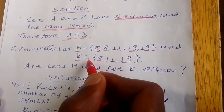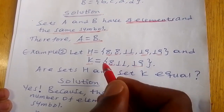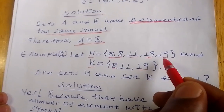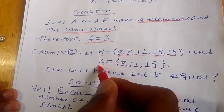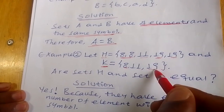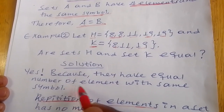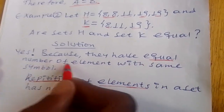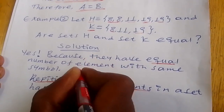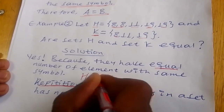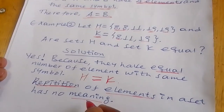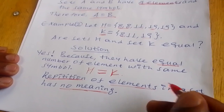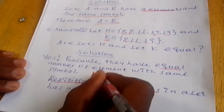Example 2: Let set H equal to {8, 8, 11, 19, 19} and set K equal to {8, 11, 19}. Note that the repetition of elements in a set has no meaning. So both sets have the same elements, therefore H equals K — they are equal sets.